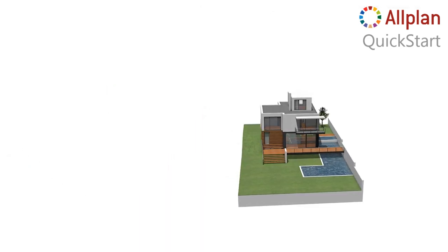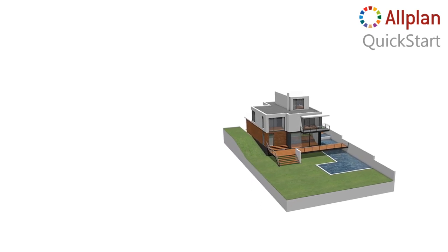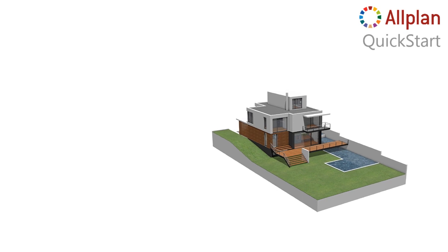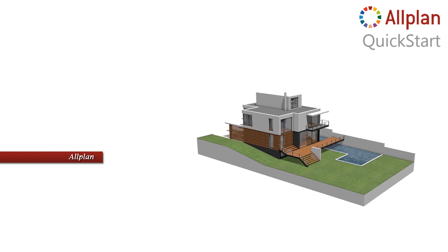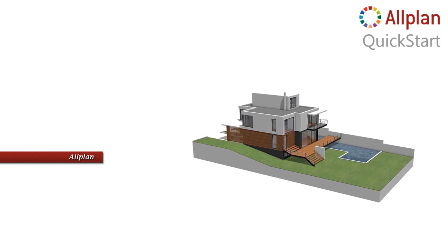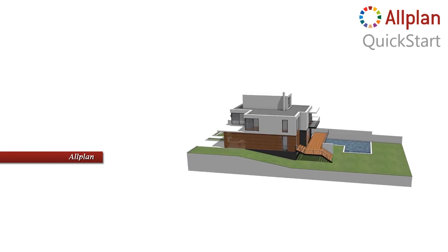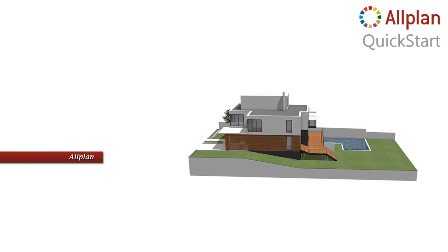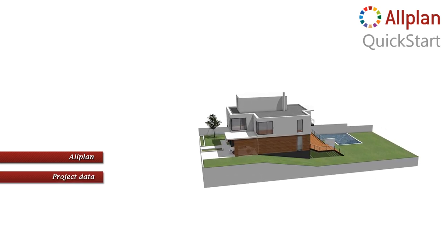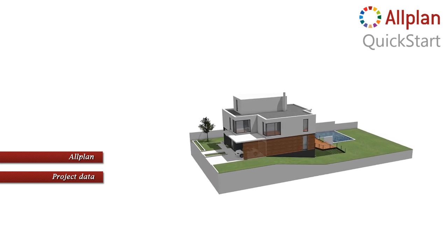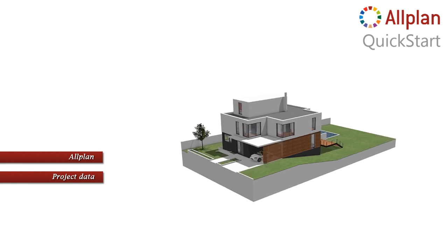The Quick Start online tutorial has been designed to enable you to do all the exercises in parallel on your computer. For this, you should install the latest AllPlan version. If you have not yet installed AllPlan, you can download and install a free 30-day trial version from our website before you start with the Quick Start units. Another thing you will need is the Quick Start project data, which you can also download. A double click on the setup file is all it takes and the Quick Start project is automatically installed in AllPlan.